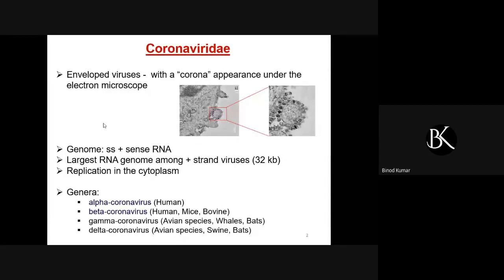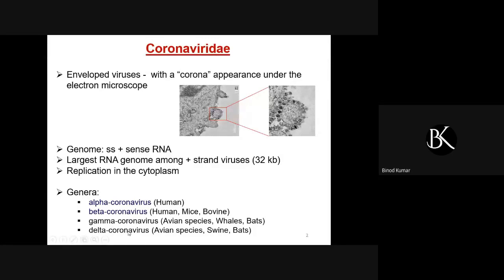There are four main genera known in this family: the alpha coronaviruses that infect humans, the beta coronaviruses that infect humans, mice, and bovine species, and then there are two more — the gamma coronaviruses and the delta coronaviruses — which infect avian species and bats.